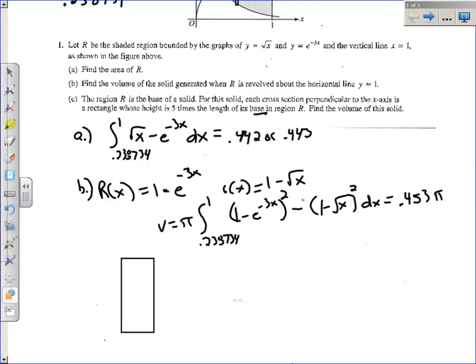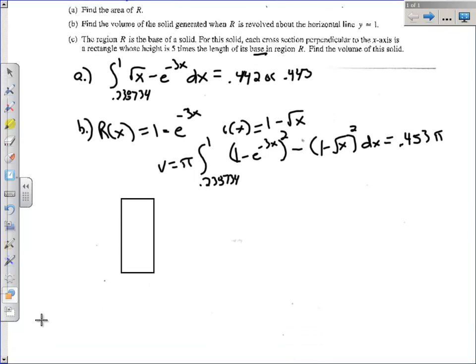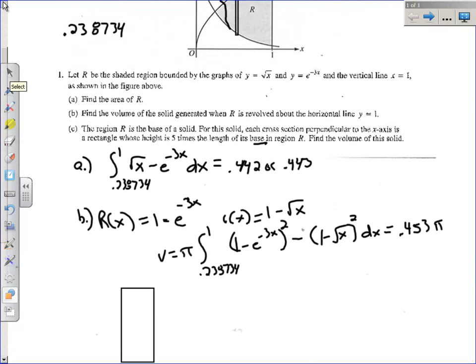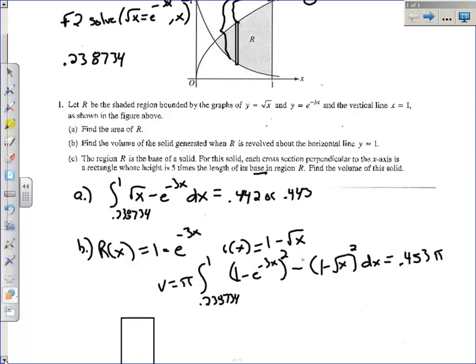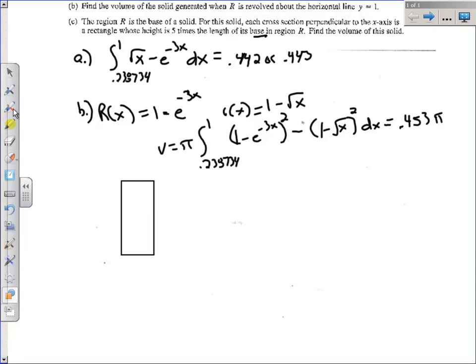Go down a little further. This rectangle is taller than it is wide. And let's go back up to the picture and look at the length of the base. So what is the length of this base? Well, that's the same thing as in A. The length of this base is top minus bottom, or square root of x minus e to the negative 3x. And the height is five times that.